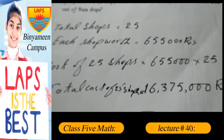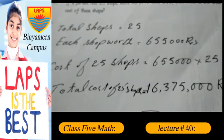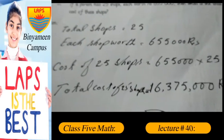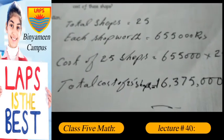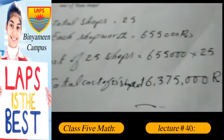If each shop is 655,000, then we multiply by 25 to get the cost of 25 shops. This is the answer to this question.